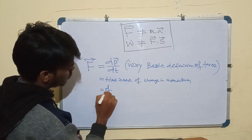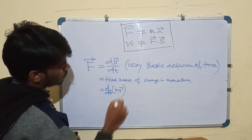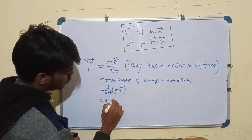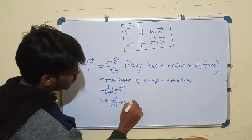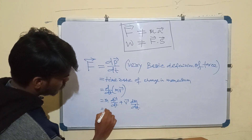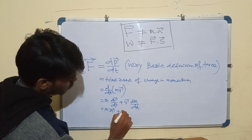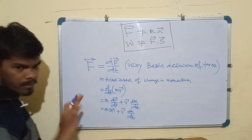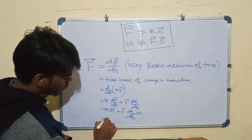We can write F as d/dt of mv, since momentum is mv. Now applying the product rule, it becomes m(dv/dt) plus v·(dm/dt), which gives us m times acceleration plus v times dm/dt. So if mass is constant, this second term is zero and F reduces to ma.